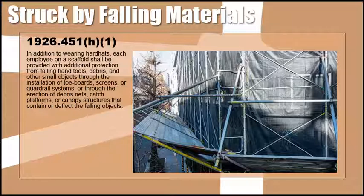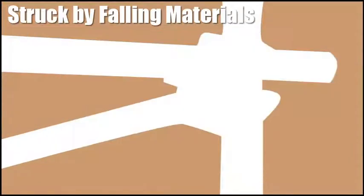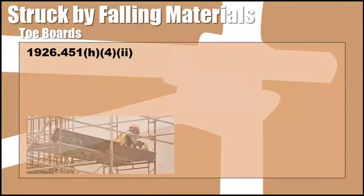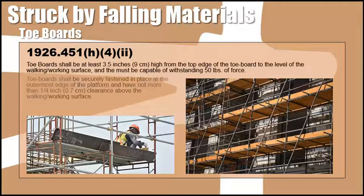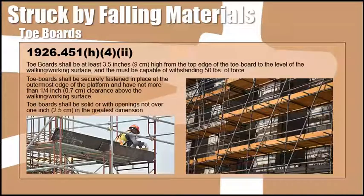When the falling objects are too large, heavy, or massive to be contained or deflected by any of the above listed measures, the employer shall place such potential falling objects away from the edge of the surface from which they could fall and shall secure these materials as necessary to prevent their falling. The purpose of a toeboard is to prevent objects, tools, and other equipment from falling over the edge or being knocked from a scaffolding structure. Toeboard requirements specify no less than 3.5 inches from the top edge of the toeboard to the level of the walking working surface, and they must be capable of withstanding 50 pounds of force.